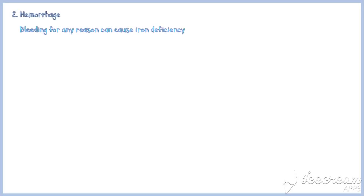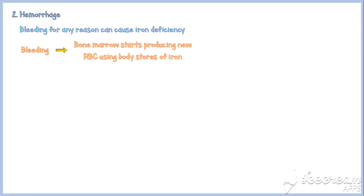Another major cause of iron deficiency anemia is hemorrhage. Bleeding for any reason can cause iron deficiency. When there is bleeding, blood cells are lost from the body, so the bone marrow starts producing new red blood cells using body stores of iron. With time, body stores of iron get depleted, which leads to iron deficiency anemia.